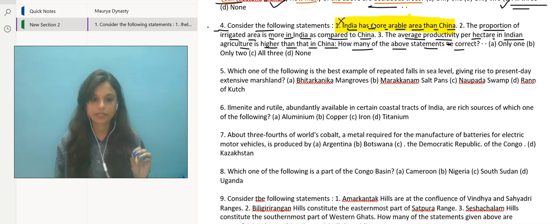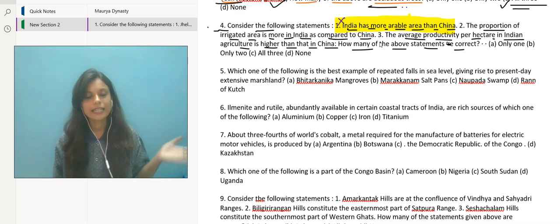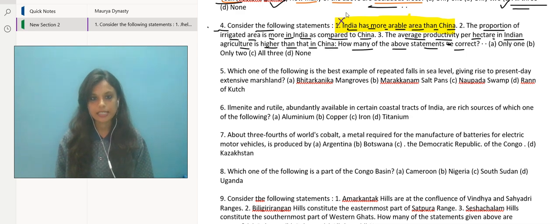At that time, India had comparatively quite a lower amount of arable land. So this one is incorrect. Let's discuss statement number two.